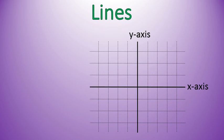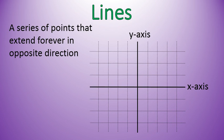What is a line? A line is a series of points that extend forever in opposite directions and are in a straight trajectory of each other.